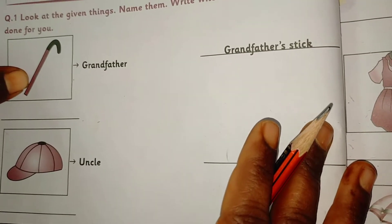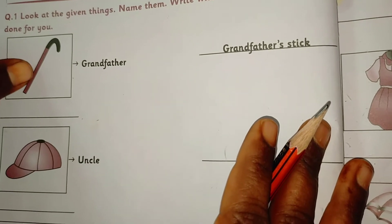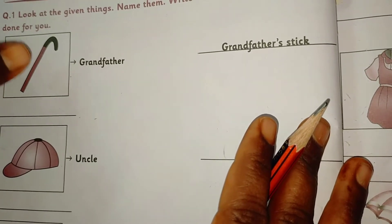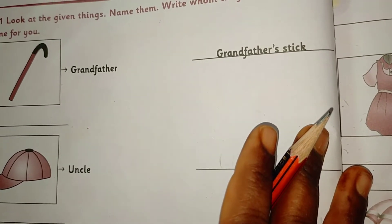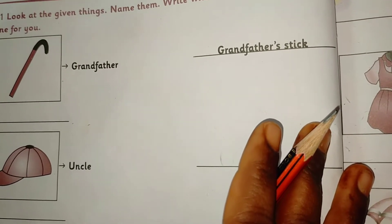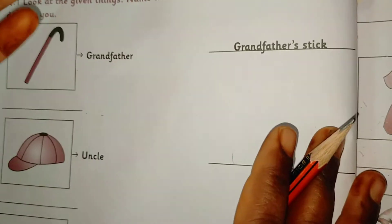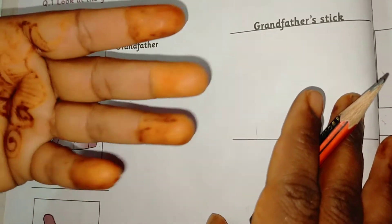These are the given things. We're going to name them and write whom they belong to. One is done for you.